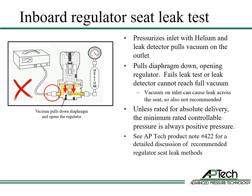The helium inboard seat leak test is not recommended for regulators because, unless you're using a sub-atmospheric regulator, pulling vacuum on the outlet of the regulator will often open the regulator, breaking the seat seal and exposing the low pressure side to pressurized helium. Vacuum on the inlet is also not recommended because it can cause a leak across the seat. A regulator does have a vacuum inlet pressure rating, but it is intended for purging, inboard testing, and system flush down only. Unless the regulator is rated for absolute delivery, the minimum rated controllable outlet pressure is always a positive pressure, typically 1 psig or greater. For more detailed information and discussion of recommended regulator seat leak test methods, please see product note number 422.